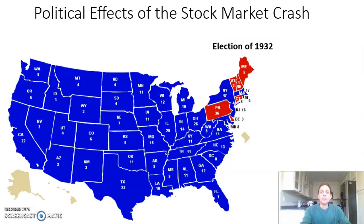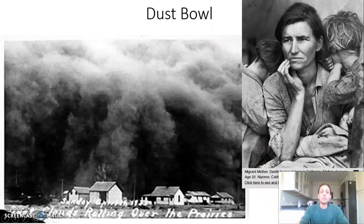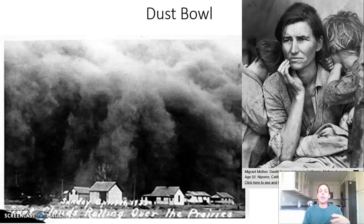One thing that spans both New Deals and even Hoover's administration is a major natural disaster known as the Dust Bowl — awful dust storms sweeping across Middle America. They're caused by a combination of overproduction on the Great Plains, lack of rain, and soil losing its fertility. What results is a mass migration of people from the Midwest out to the West Coast and California — captured in the famous photograph by Dorothea Lange, who documented the experience of these migrants moving out West.